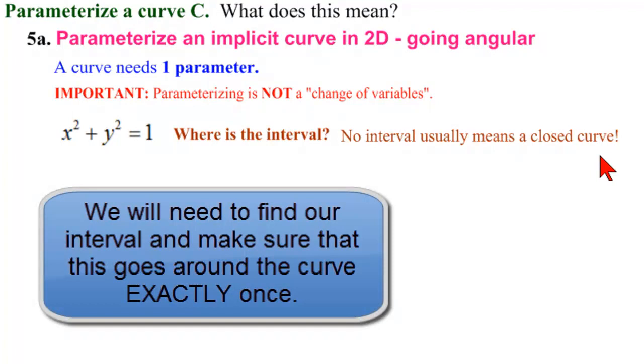No interval usually means that we're looking at a closed curve. So we're going to have to find our interval, the start point and the end point, and see that they go around exactly once.